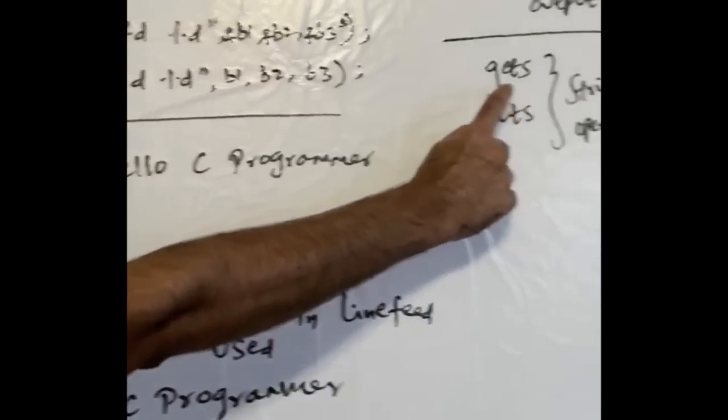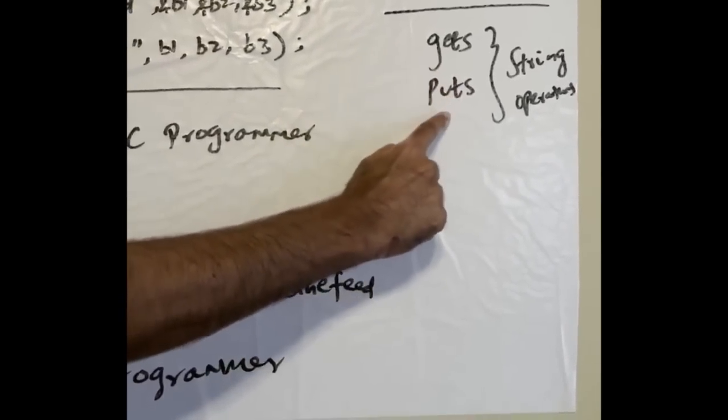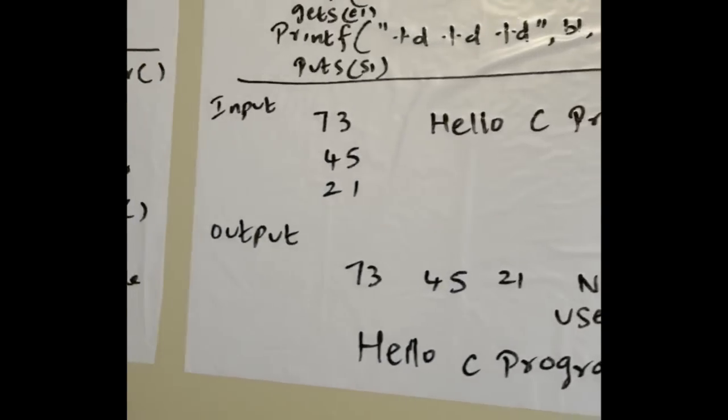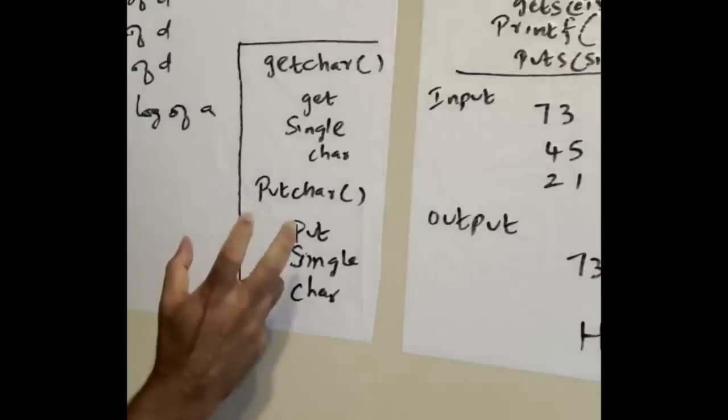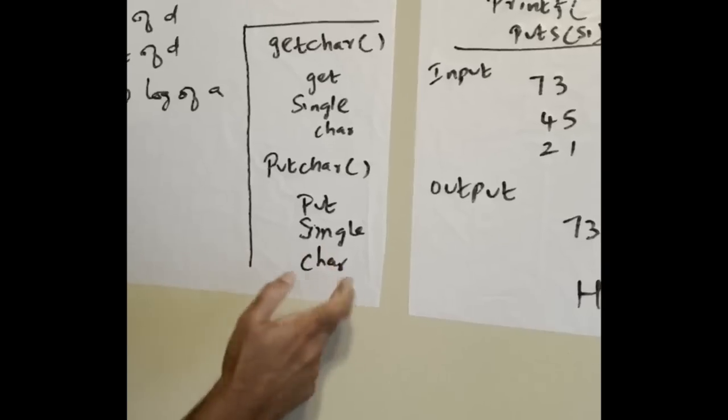Another statement: gets means it's a string operator, it'll get string, puts string - input the string value, output the string value. These are like getchar, putchar - here it's single character.